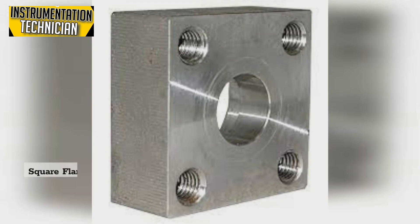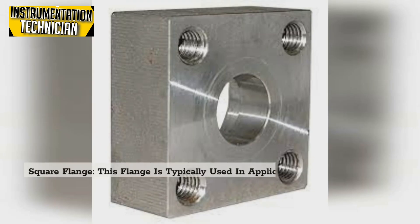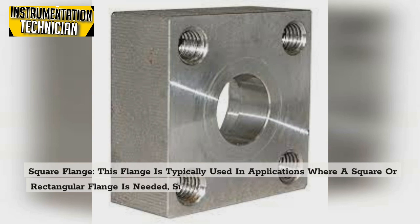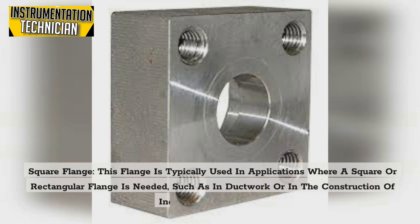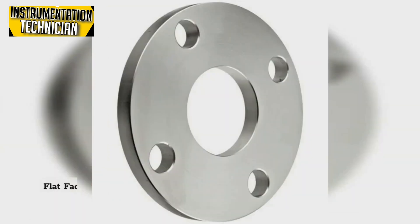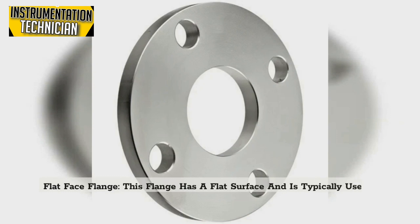Square flange: This flange is typically used in applications where a square or rectangular flange is needed, such as in ductwork or in the construction of industrial equipment. Flat face flange: This flange has a flat surface and is typically used in applications where the piping system is under low pressure.